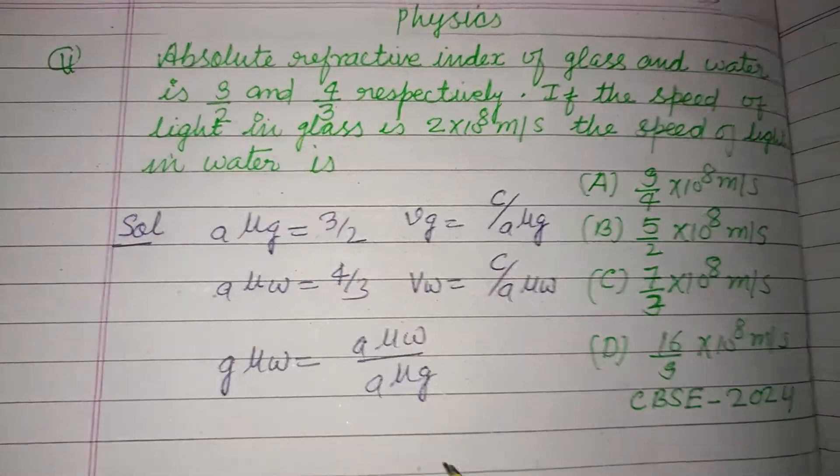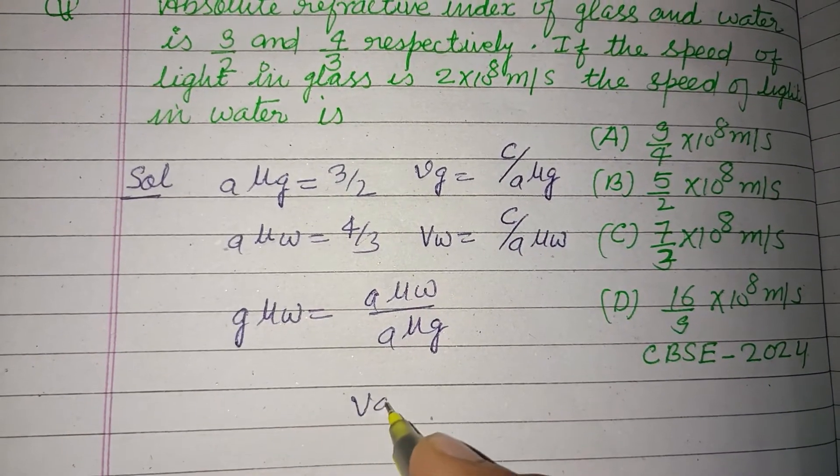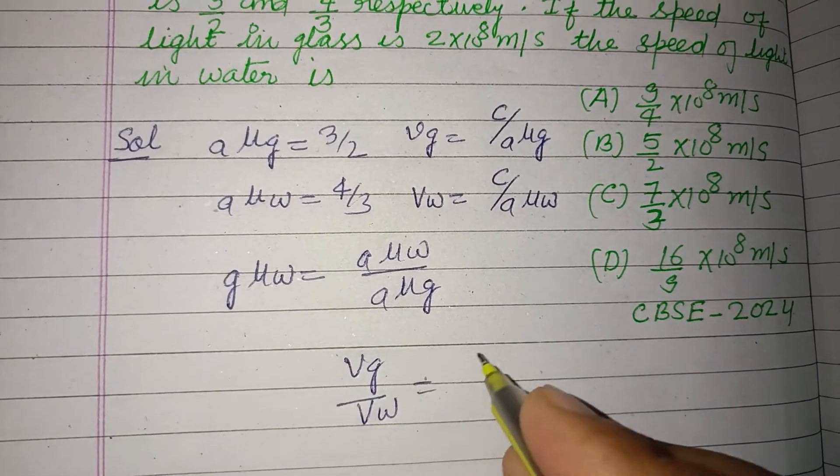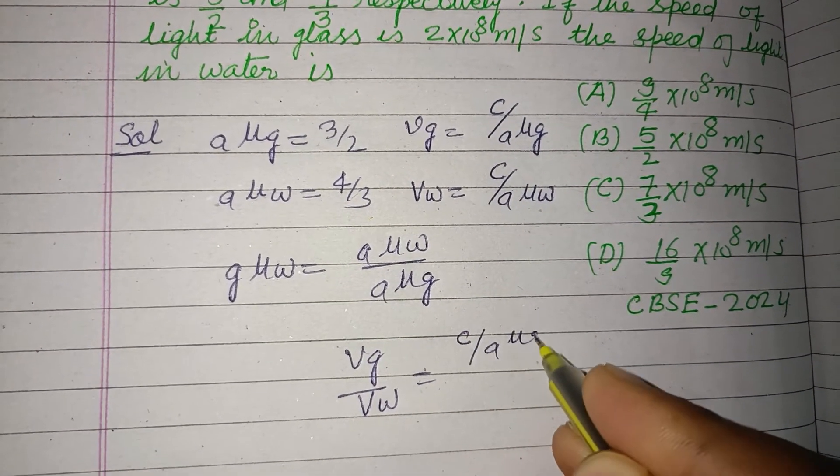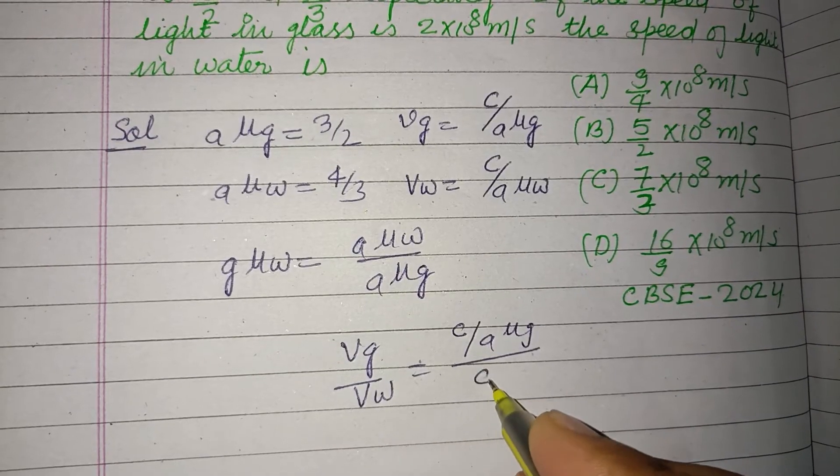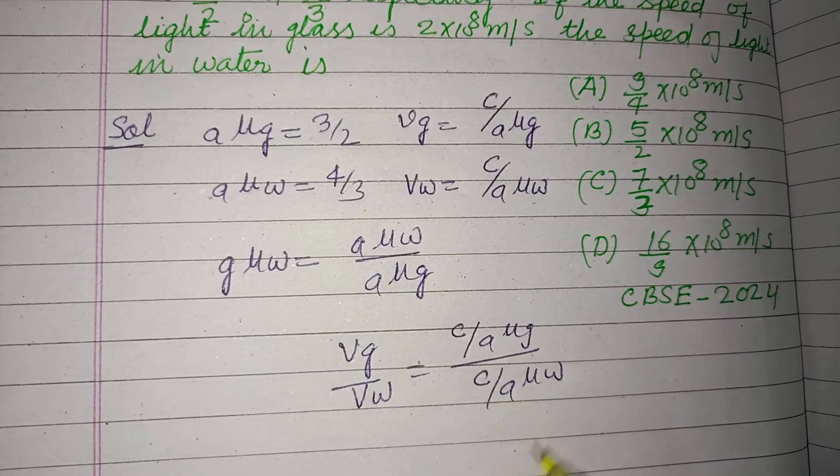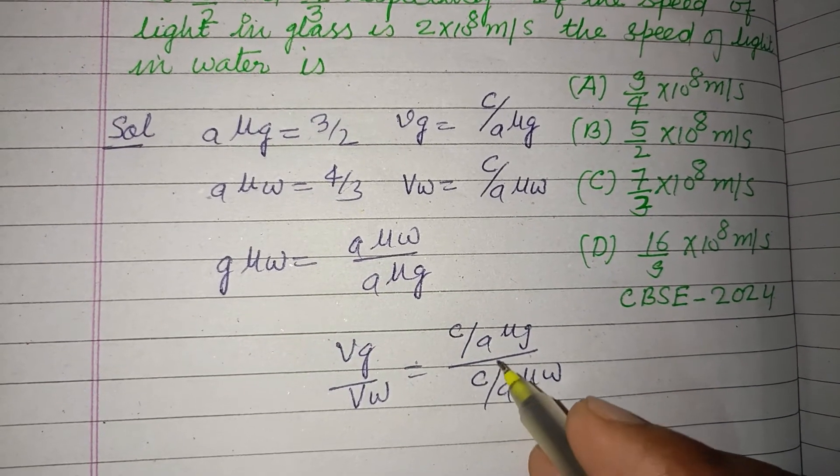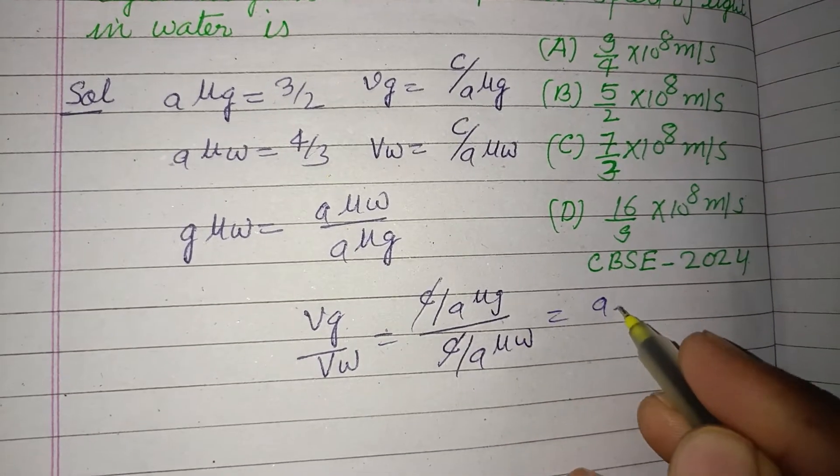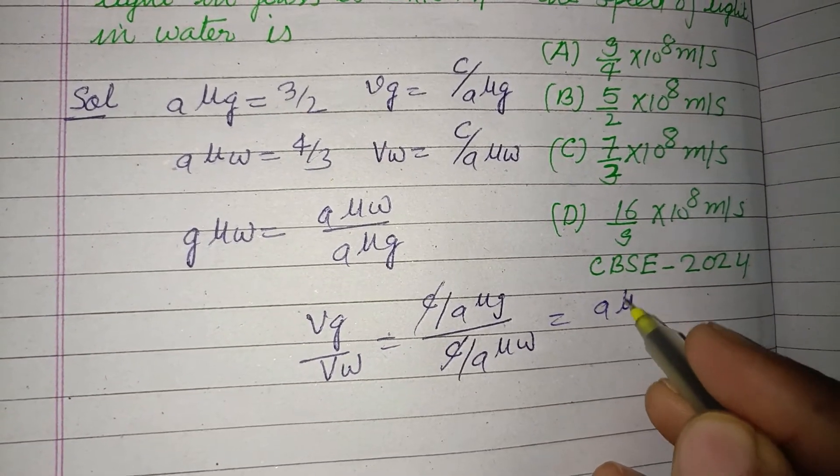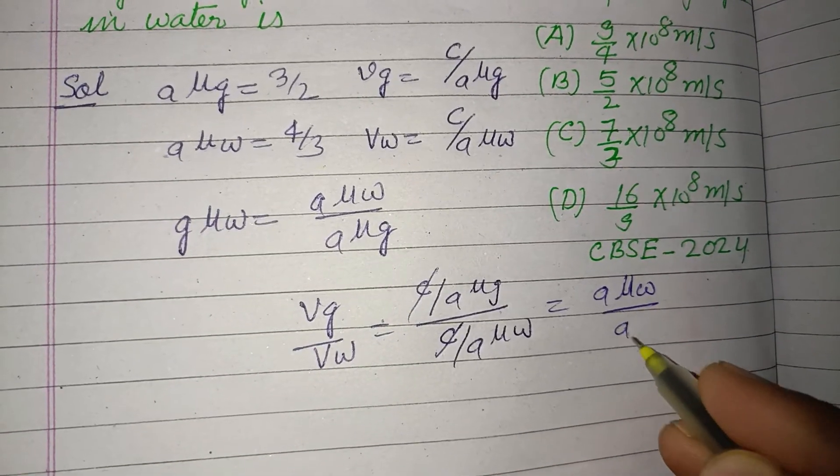Dividing this, vg over vw equal to c upon a mu g upon c over a mu w. So dividing this, c cancels, we got a mu w over a mu g.